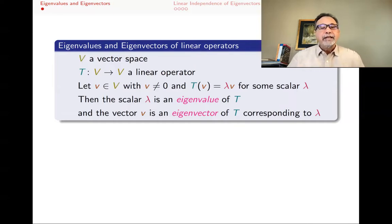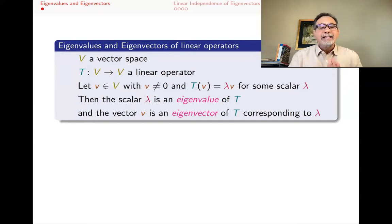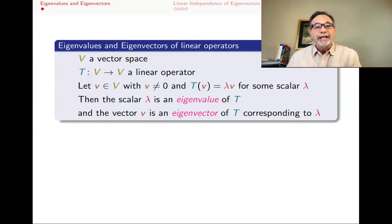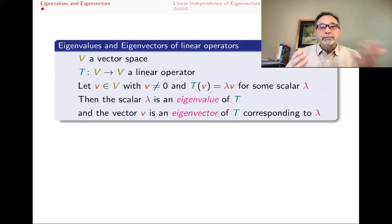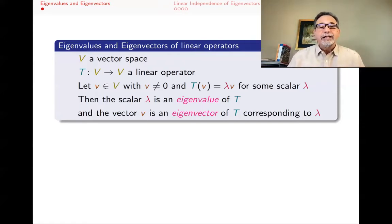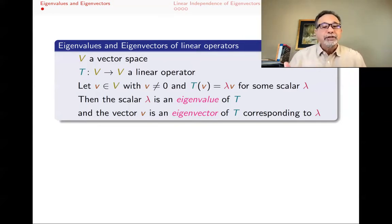Now, if you have an n by n matrix, you can also think of it as a linear operator from R^n to R^n. You take n-tuples and multiply the matrix by it, and you get another element of R^n. So matrices are also an example of linear operators, and therefore the same definition works for them.